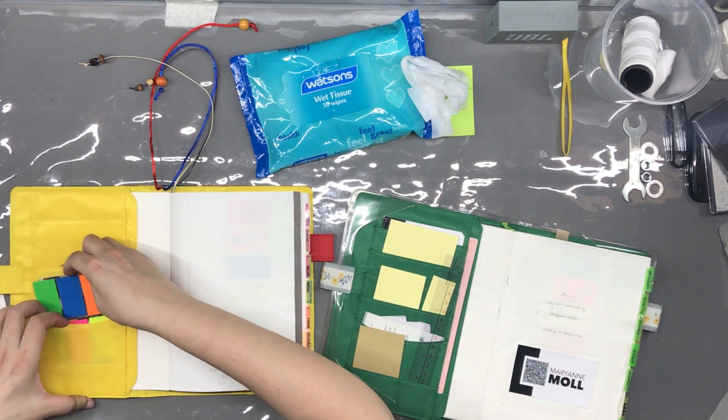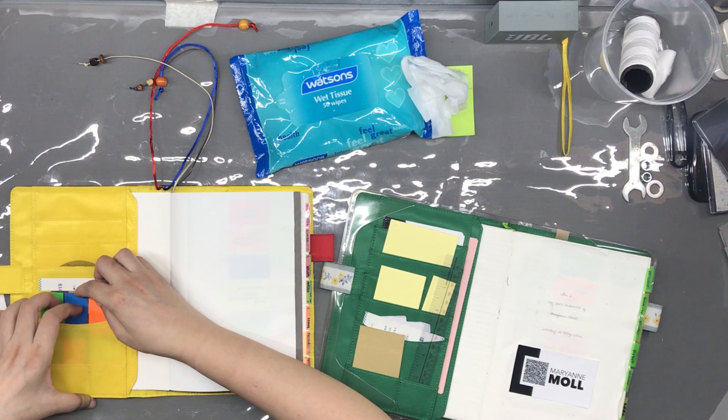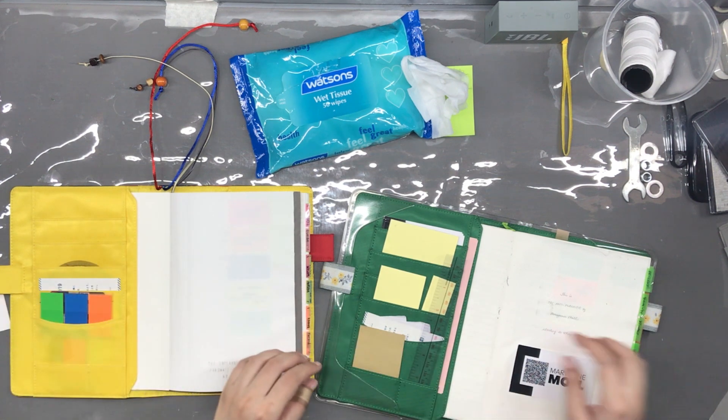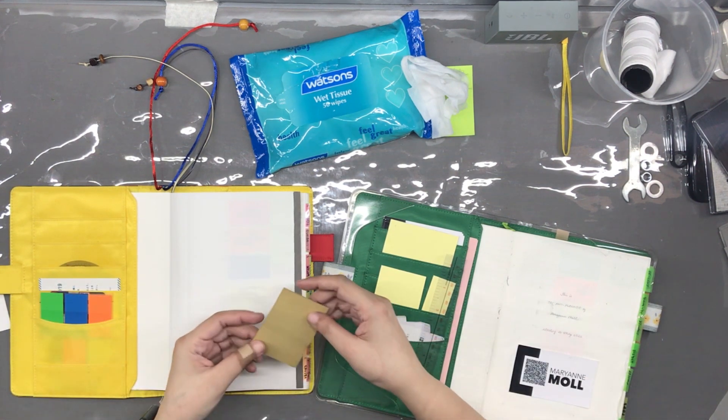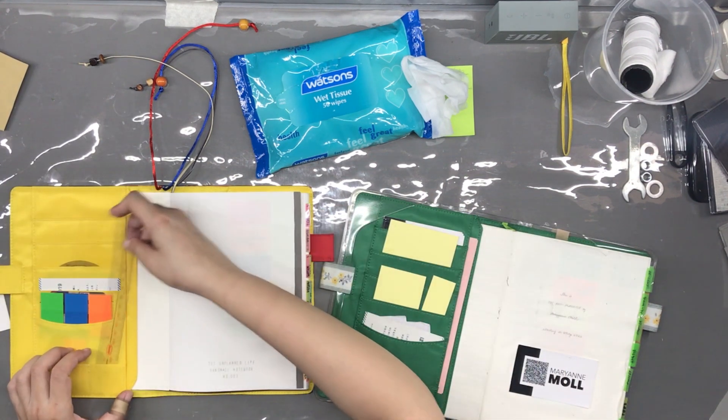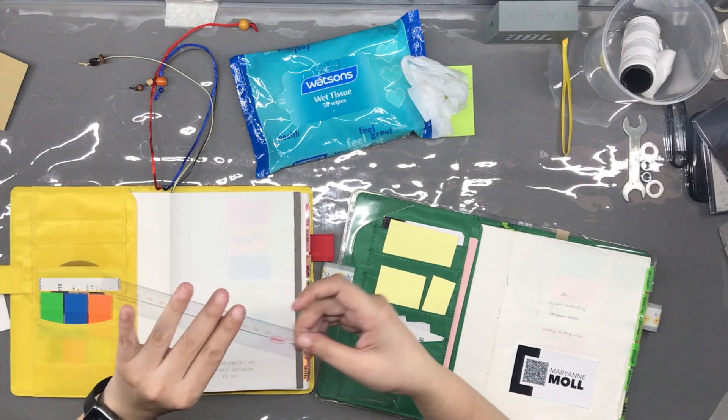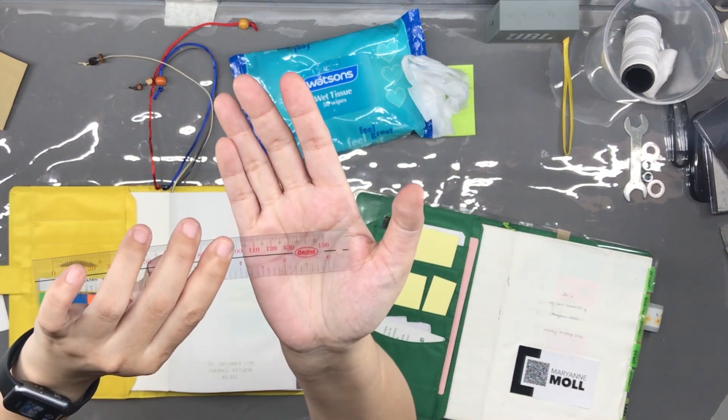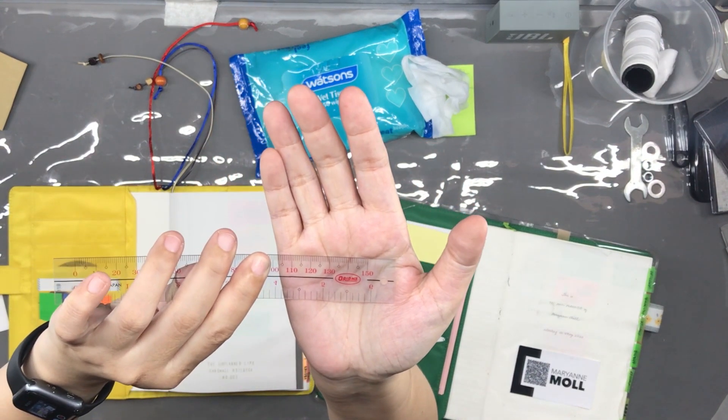After that smudge is cleaned up, I started transferring the items from the pockets of the old green notebook cover into the new yellow notebook cover. I have this small transparent ruler under the brand Orions. I love this brand. I have been using these rulers since high school.